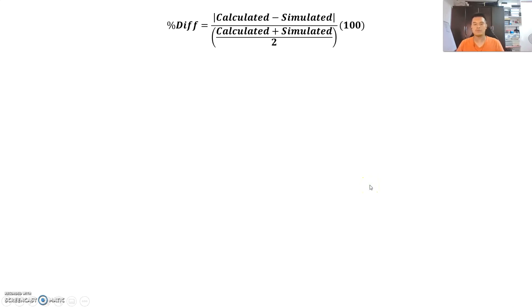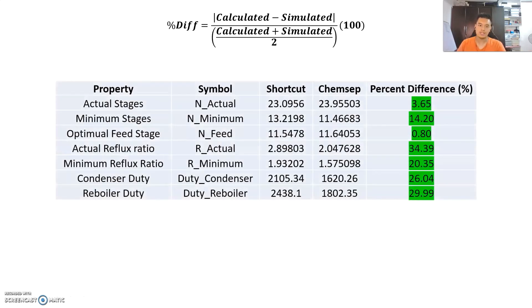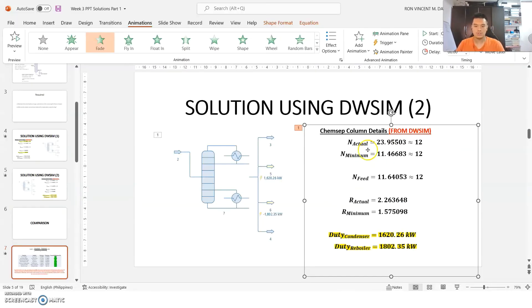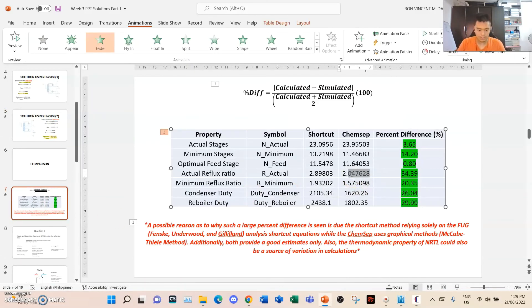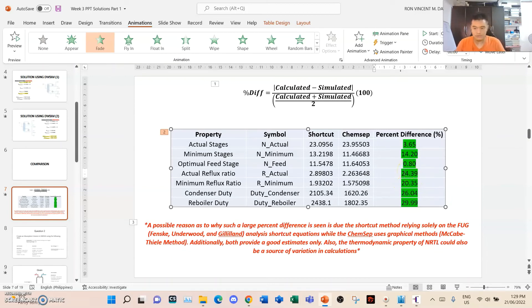The comparison: how do we compare these two datasets? We need to know the difference between the two values — not only from the required values but also the extra detailed values specified earlier. Doing a percent difference analysis: the percent difference for the actual reflux ratio is approximately 24.58%.